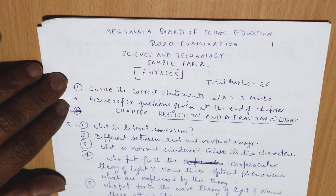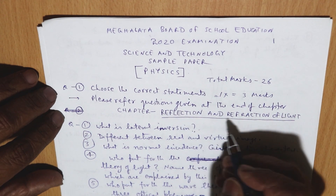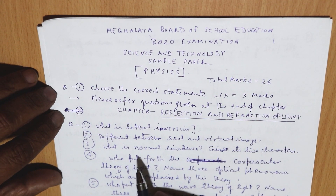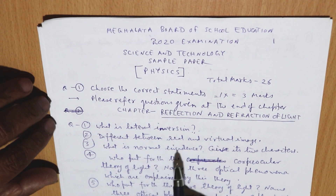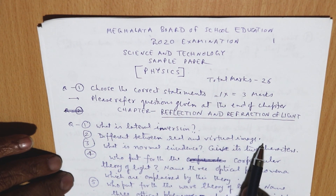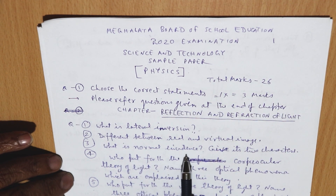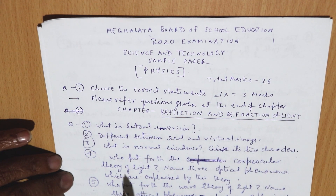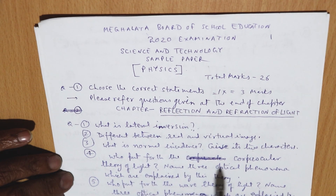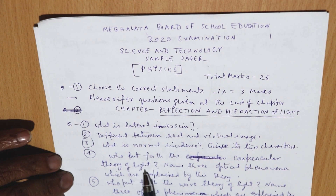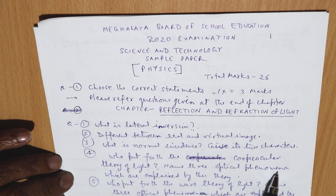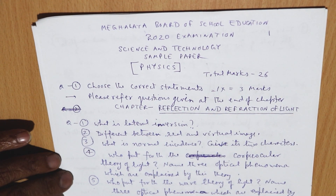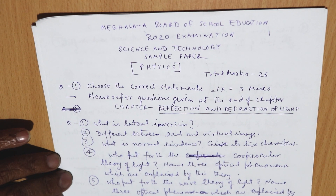Important questions in Reflection of Light: number one, what is lateral inversion or sideways inversion? Second, differentiate between real and virtual image. Third, what is normal incidence — give its two characteristics. Fourth, who put forward the corpuscular theory of light and name three optical phenomena explained by this theory. Then also, who put forward the wave theory of light and name three optical phenomena explained by this theory.